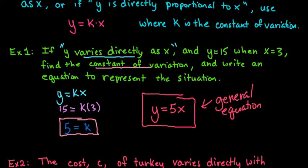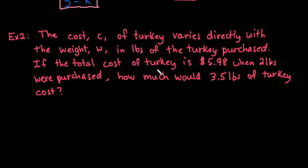So the next situation that I have, I actually have a situation where we have the context of the problem. So the cost c, we're going to use c for cost, of turkey varies directly with the weight w. So they don't have to use x and y. x and y are just what are typically used, but you can use other variables to represent x and y. So for this, remember that it's y varies directly with x. So we would just say that c is equal to k times w.